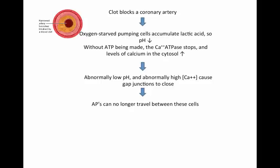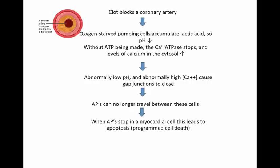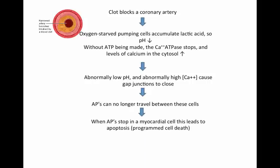With closed gap junctions, these action potentials can no longer travel between myocardial cells, either pumping cells or auto-rhythmic cells. And when that happens — when action potentials stop for any length of time — this leads to a process called apoptosis, or programmed cell death. And so those myocardial cells die.